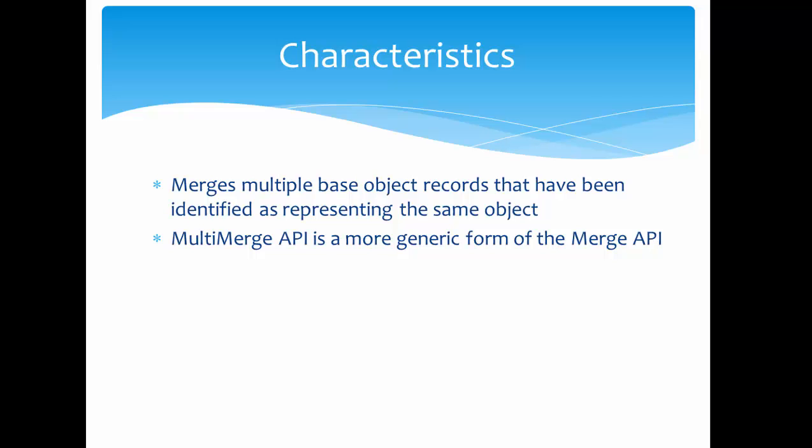The characteristics of the Multi Merge API: it merges multiple base object records that have been identified as representing the same object. We just pass the multiple records to be merged, and the final winner record is decided by Informatica MDM — meaning we do not have to specify which is the source and which is the target record. The target record is populated based on trust and survivorship. Multi Merge API is a more generic form of Merge API, so Merge API is essentially a subset of Multi Merge API.